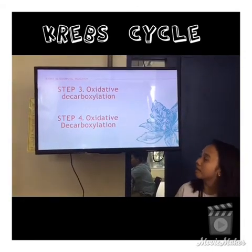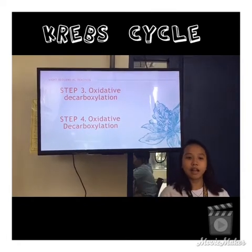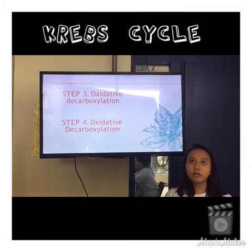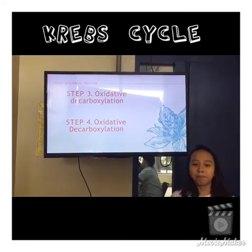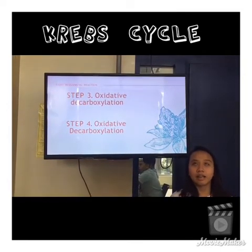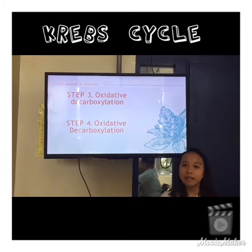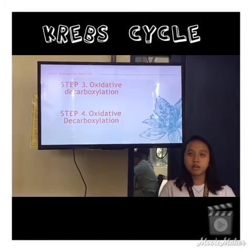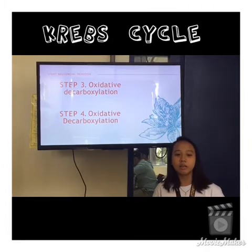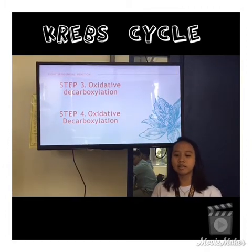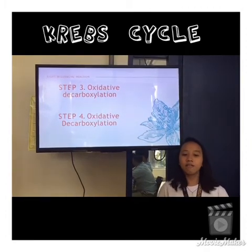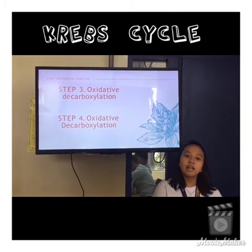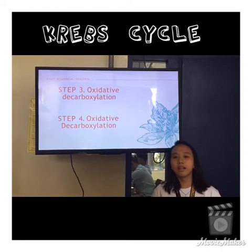Step three is oxidative decarboxylation. The isocitrate is oxidized into alpha-ketoglutarate by the enzyme isocitrate dehydrogenase. In this reaction, a molecule of NAD is reduced to NADH and a molecule of carbon dioxide is generated. Alpha-ketoglutarate is a five-carbon compound since one carbon is lost as carbon dioxide.